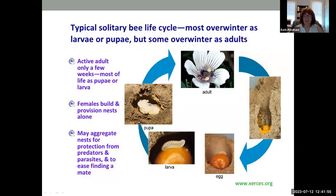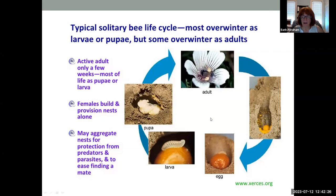On the other hand, here's a solitary bee cycle. These bees only live a few weeks, so if they're specialists and you don't have the flowers they need for pollen, you won't have them in your yard. The female builds and provisions the nest alone, though they may aggregate nests. She lays an egg on a pollen ball, the larva hatches and eats it, pupates, and emerges as an adult that only lives a few weeks in spring, summer, or fall.